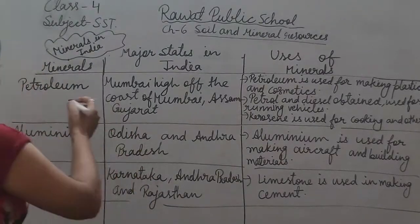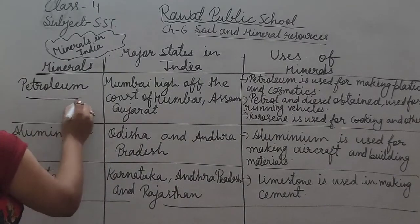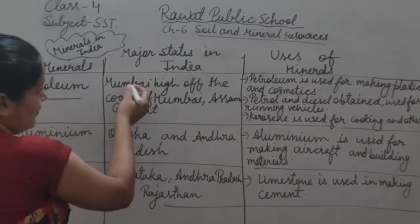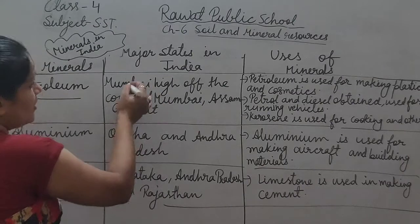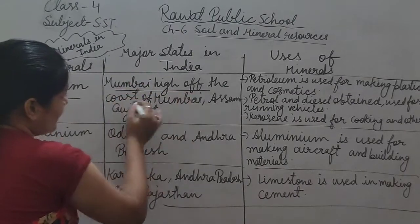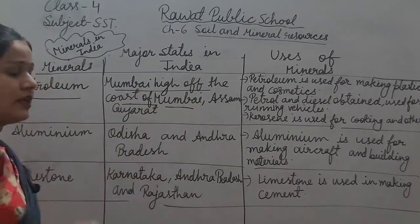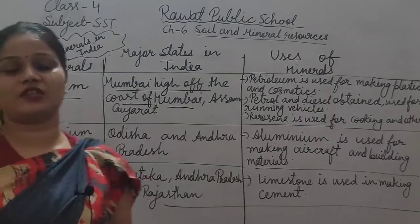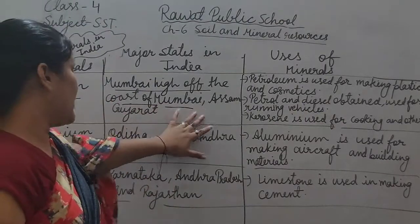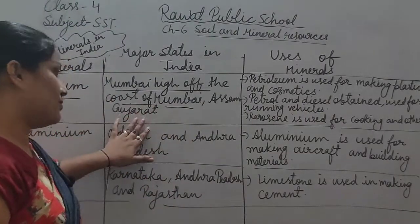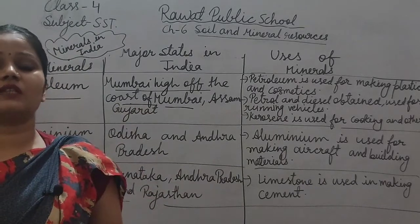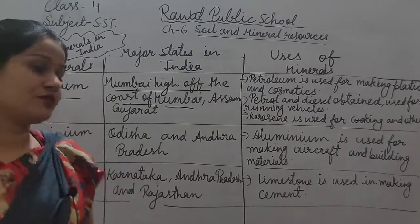First, petroleum. Where is petroleum found? Mumbai High, off the coast of Mumbai, which means the state of Maharashtra, as well as Assam and Gujarat. These are the major states where petroleum is found.